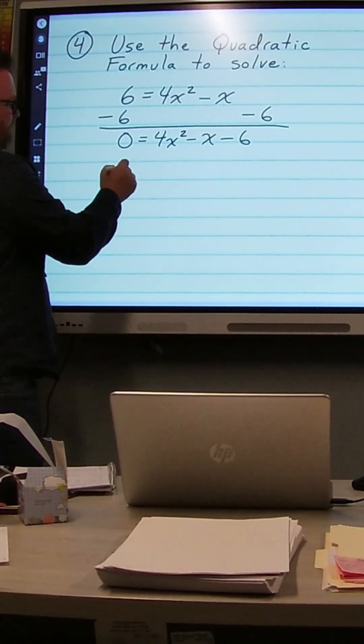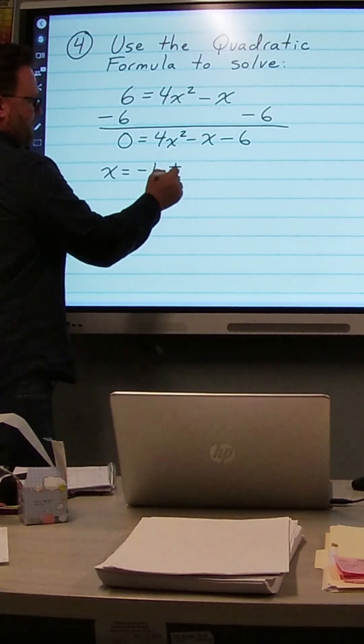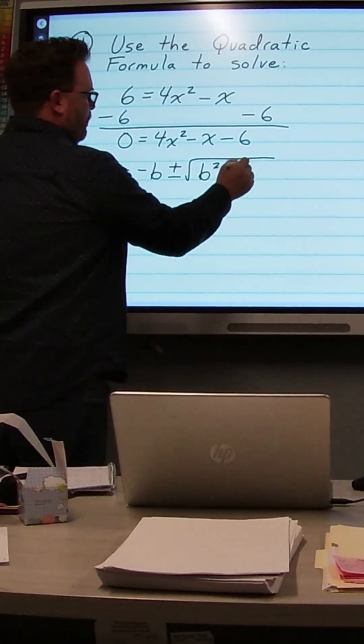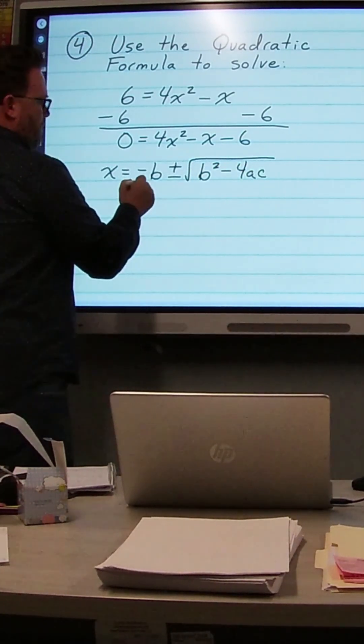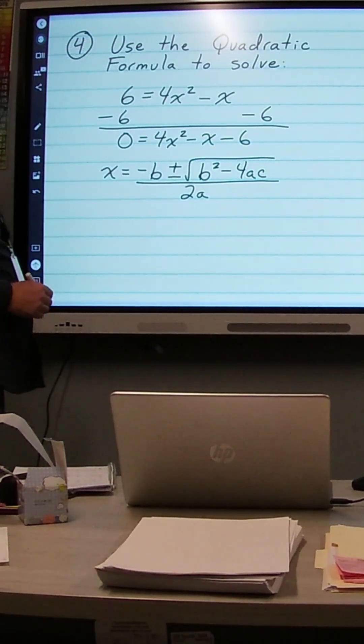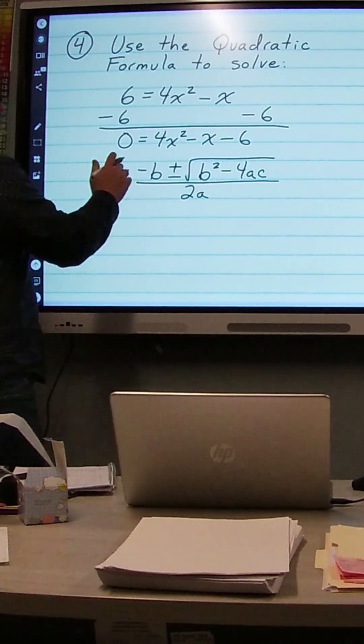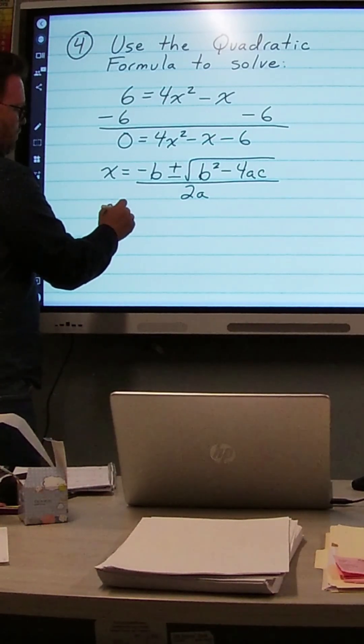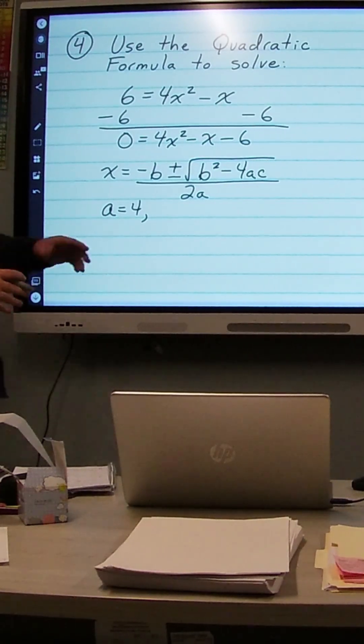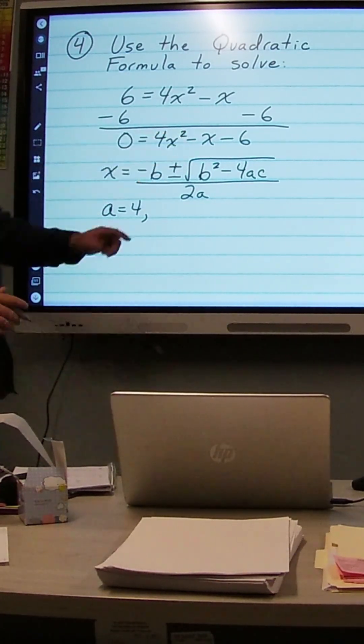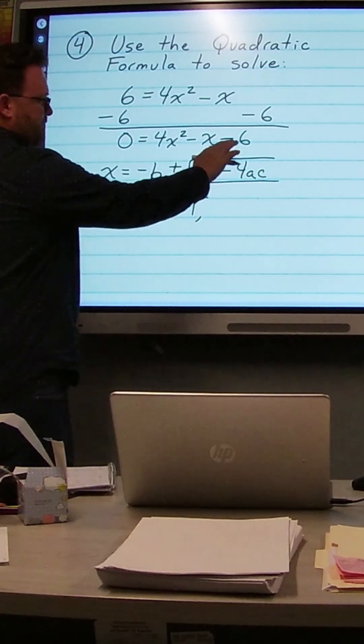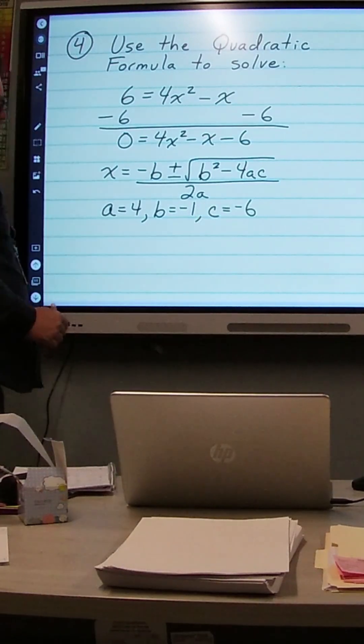We have our quadratic formula: x equals negative b plus or minus the square root of b squared minus 4ac all over 2a. a refers to the coefficient, the number in front of x squared, so a is equal to 4. b refers to the coefficient, the number in front of x. We have negative x, so that's a negative 1, so b is negative 1. And c is the constant by itself, so we have negative 6.